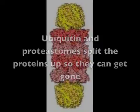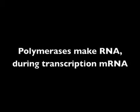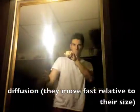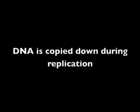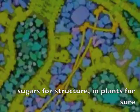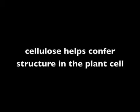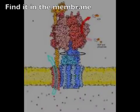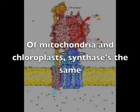Ribosomes make RNA during transcription — mRNA, RNA polymerase. The mRNA today contains the codons for these proteins. Proteins move around by diffusion. DNA copied down in replication. Sugars for structure in plants for sure — cellulose helps confer structure in plant cells. Synthase makes ATP — found in the membrane of mitochondria and chloroplasts.